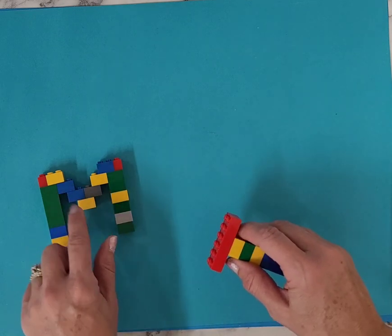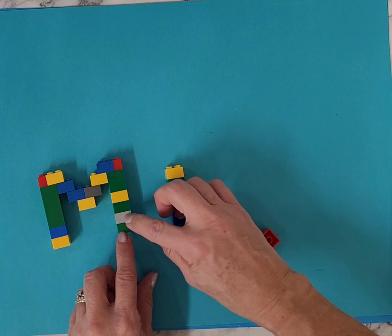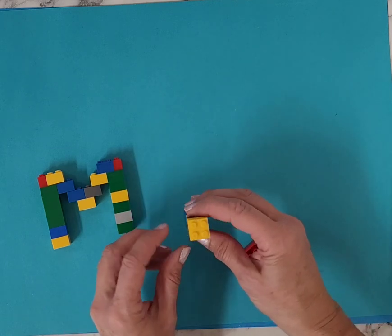M is a little more tricky, but it's not impossible. So I had these six of these little square pieces.